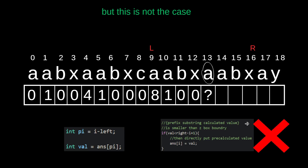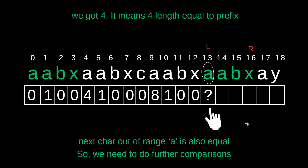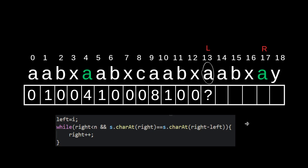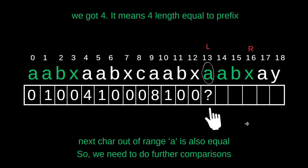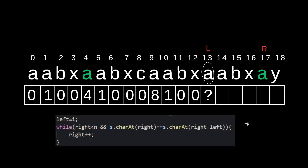We got AABX, which is also equal to the prefix. But the next character we are getting is also A, which is also equal to the prefix. So we need to do further comparisons — increment R. Now L will shift. We have a new Z range — a new boundary. L will shift to the ith index. Now this is our new Z box.